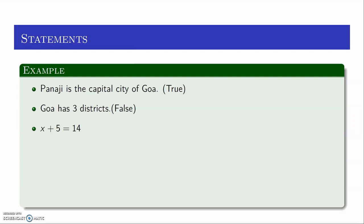X plus 5 is equal to 14. Now, to see whether this is true or false, it depends on the value of X. If X is 1, then this sentence is false. Whereas if X is 9, this sentence is true. So if X takes any value other than 9, this sentence is going to be false. But at a given time, it will be either true or false — exactly one of these two things has to happen. It cannot be both true and false at the same time. So this sentence is either true or false depending on the value of X, but not both.